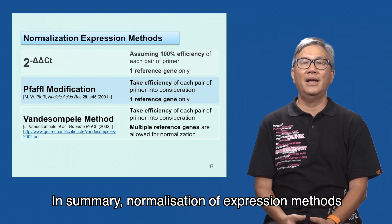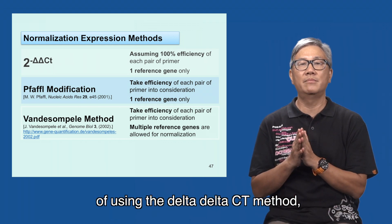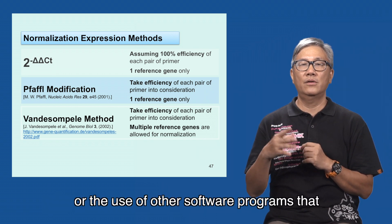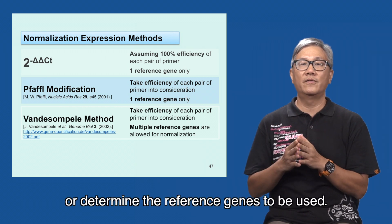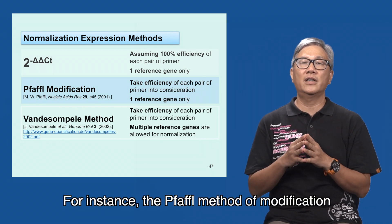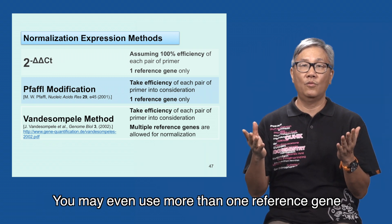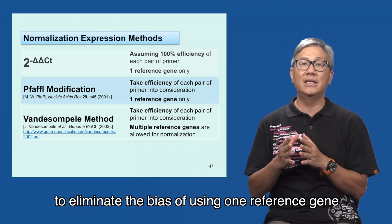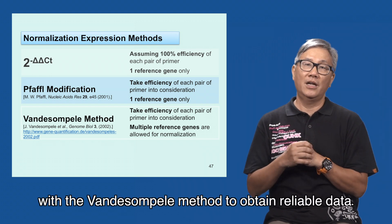In summary, normalization of expression methods includes the simple concept of using the delta-delta CT method using one stable reference gene that is validated first, or the use of software programs available to calculate or determine the reference genes to be used. For instance, the geNorm method is also commonly used for real-time PCR experiments. You may even use more than one or multiple reference genes to eliminate bias, using the geNorm method to obtain reliable data.